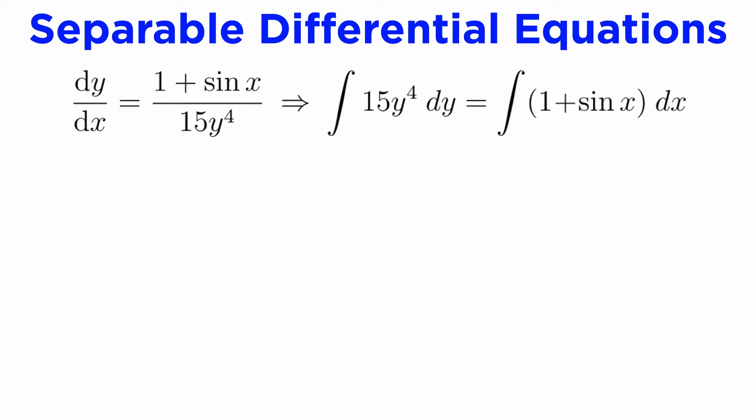There's another way to solve separable DEs with boundary conditions, and you may find it faster. Let's return to the step where we were about to integrate both sides in the previous method. We had just separated our equation to get 15y to the fourth dy equals 1 plus sine of x dx.